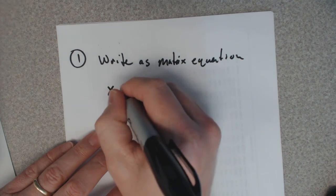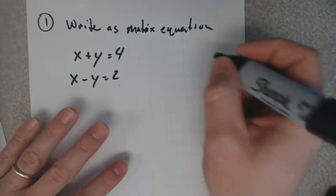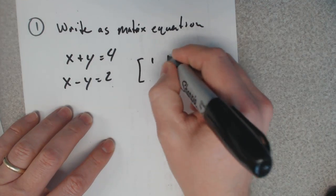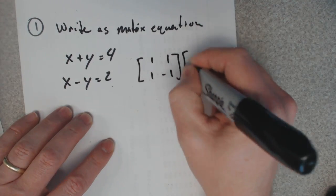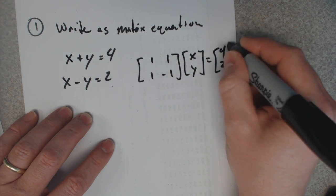In our example, it's x plus y equals 4, x minus y equals 2. So that equation is 1, 1, 1, negative 1, x, y, 4, and 2.